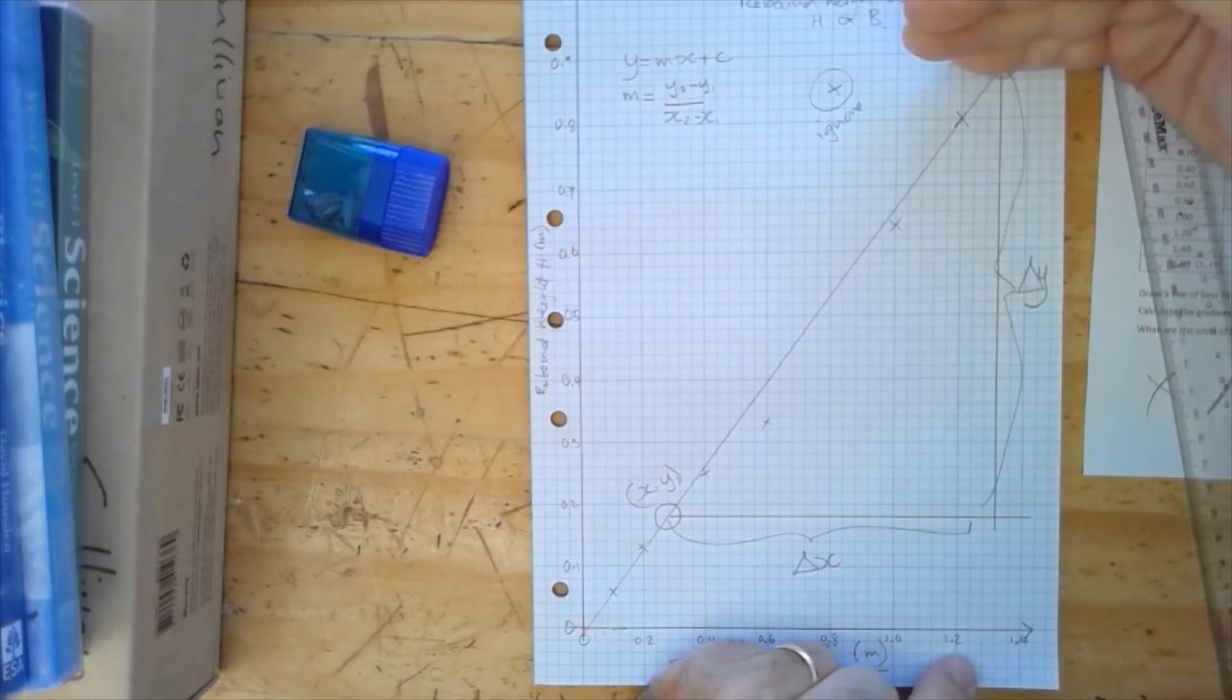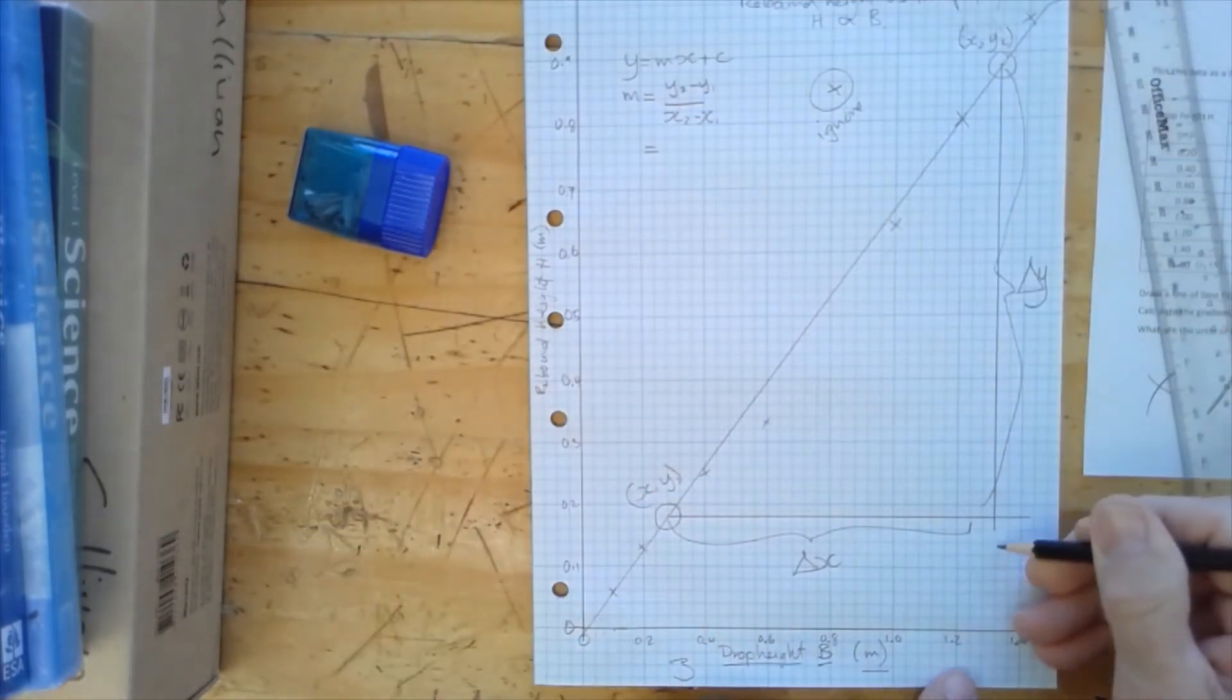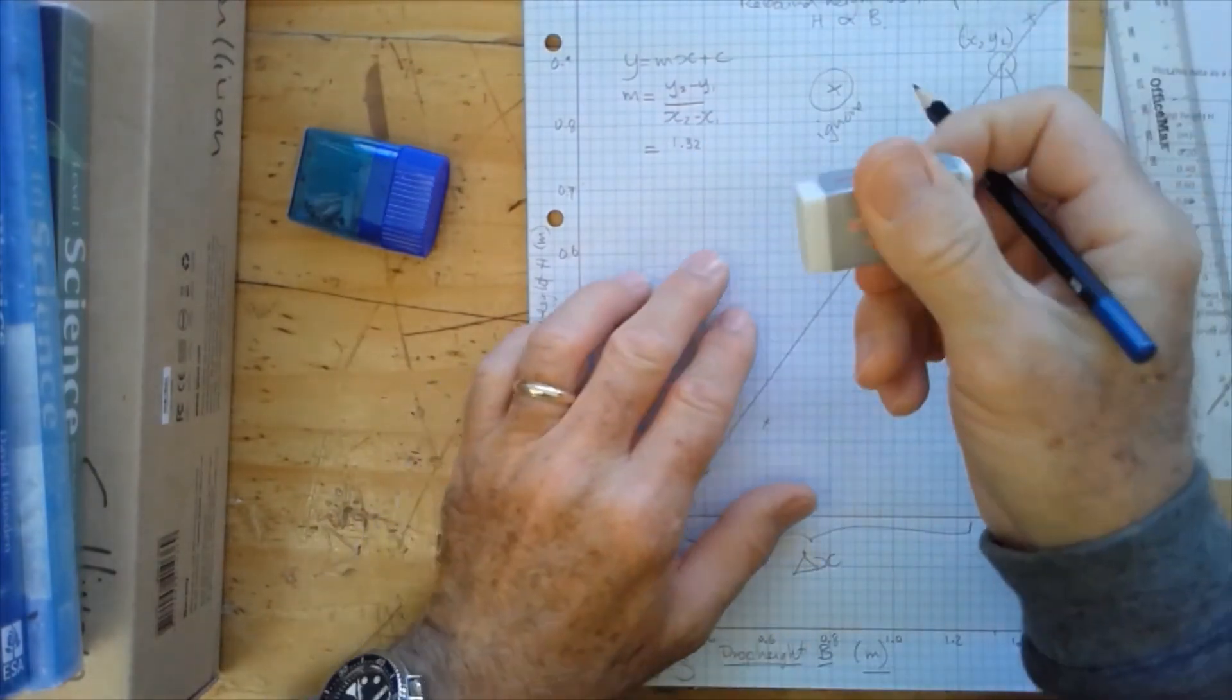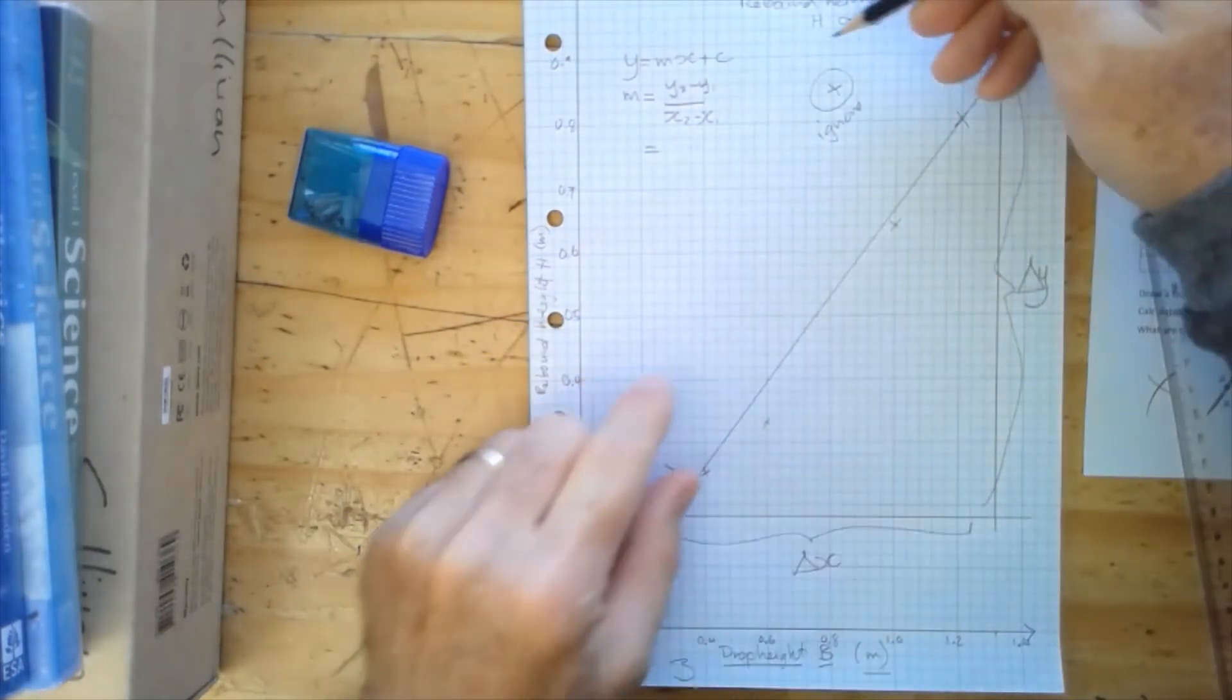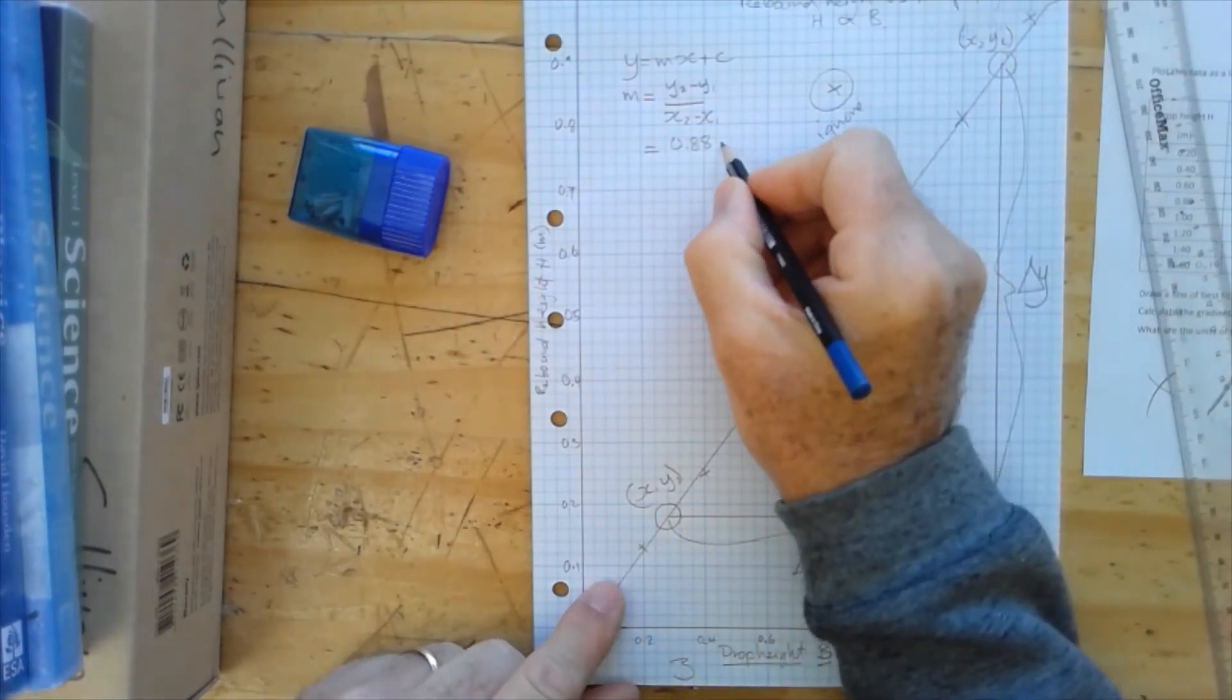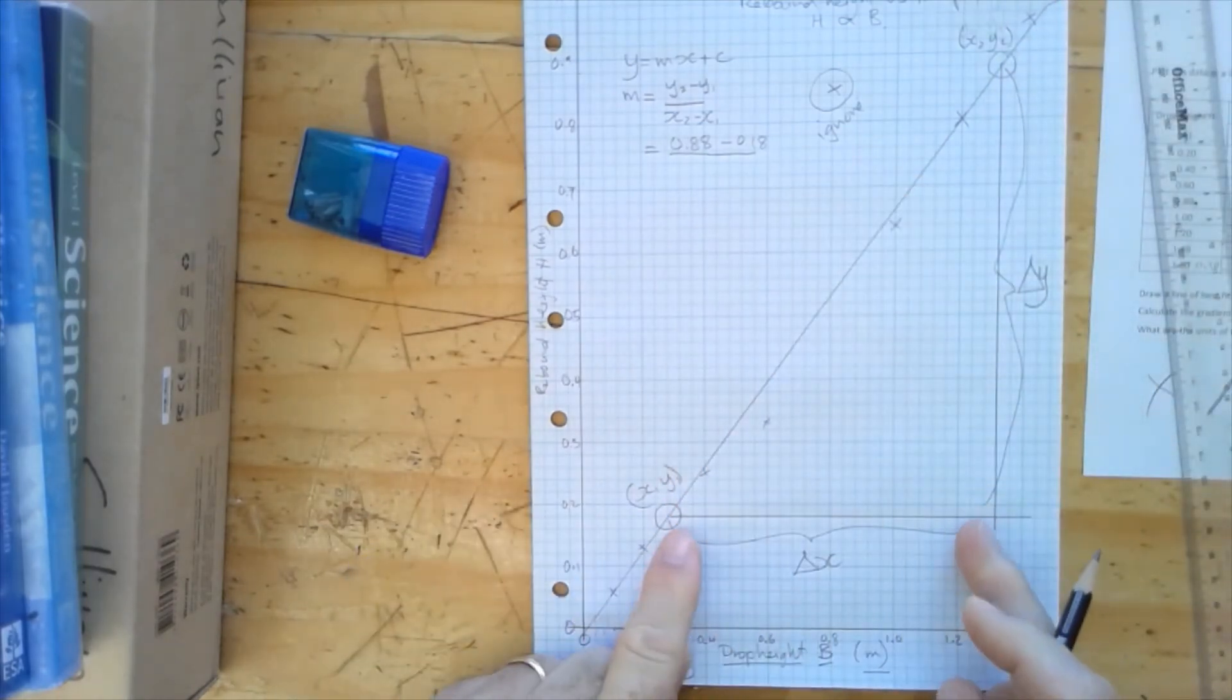Y2 minus y1, x2 minus x1. So we can read off these values. Y2 is 1.32, is 1.32, sorry I made a mistake there again. Easily done. Y2 is this value here, 0.88, 0.88, and y1 is this value, 0.18.